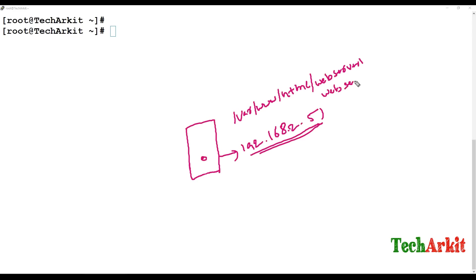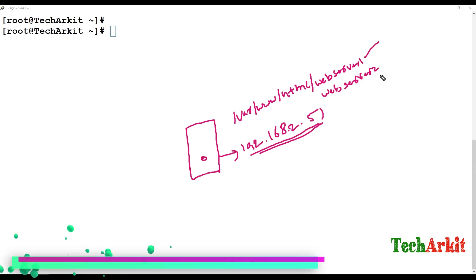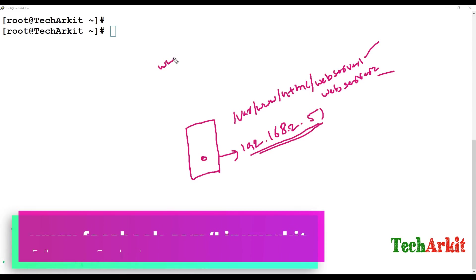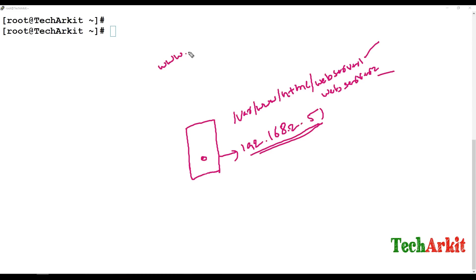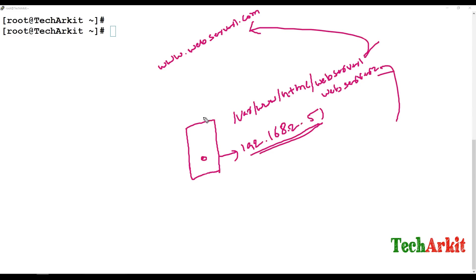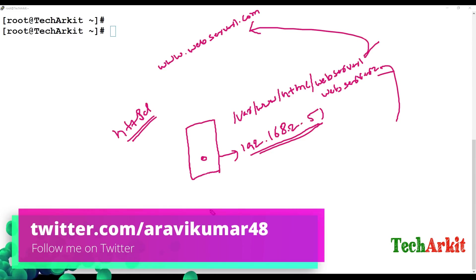So web server one will be one virtual server and web server two will be another. For example, if I type www.webserver1.com I will get the first website, and if I type www.webserver2.com I will get the second website. This is done using a single httpd web server instance to host multiple servers on one physical host.